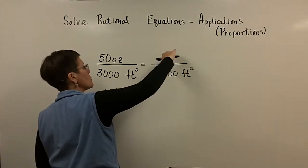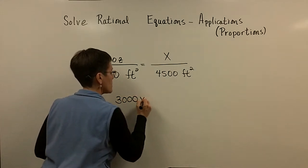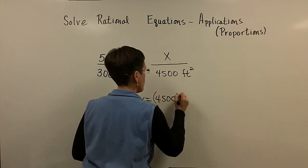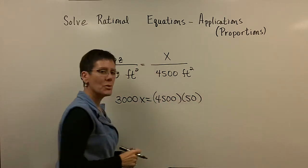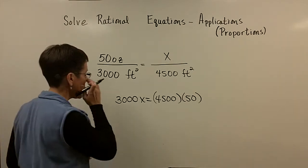So I'm going to set this product, the 3,000x, equal to this product, 4,500 times the 50. I probably should keep my units on these. You know, sorry I didn't.